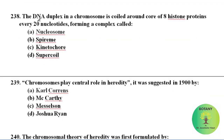The DNA duplex in a chromosome is coiled around a core of 8 histone proteins every 200 nucleotides, forming a complex called a nucleosome.